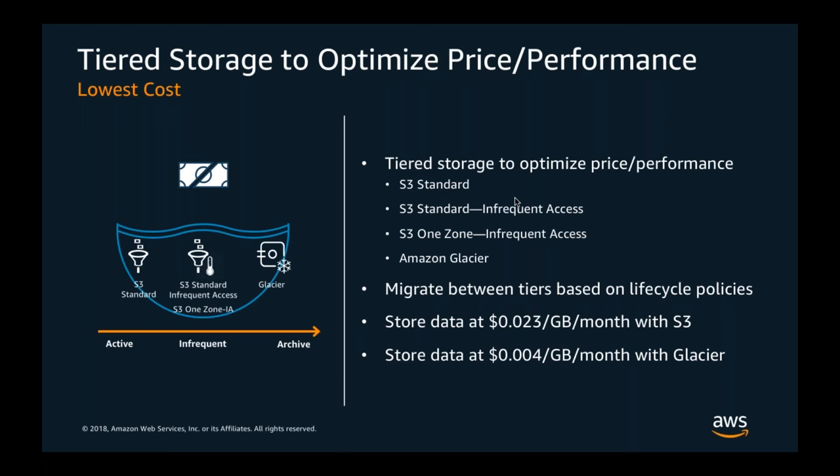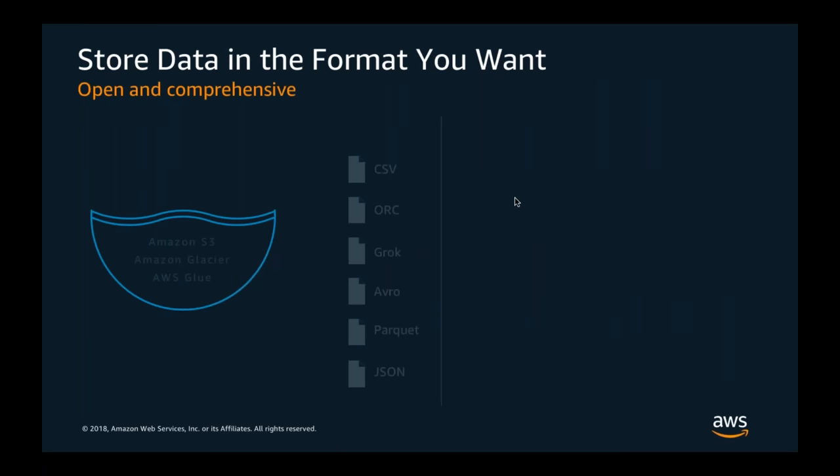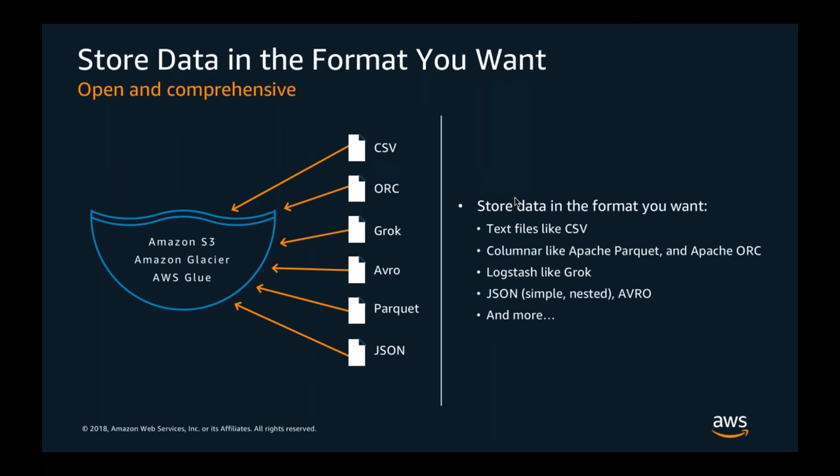With S3 lifecycle policies, configured once at the bucket level, you can say: keep data in S3 Standard for a month, then move to Infrequent Access, then to Glacier after three months, and delete after a year. The service automatically transitions data across these storage classes, and since they're priced differently, you automatically enjoy cost savings.